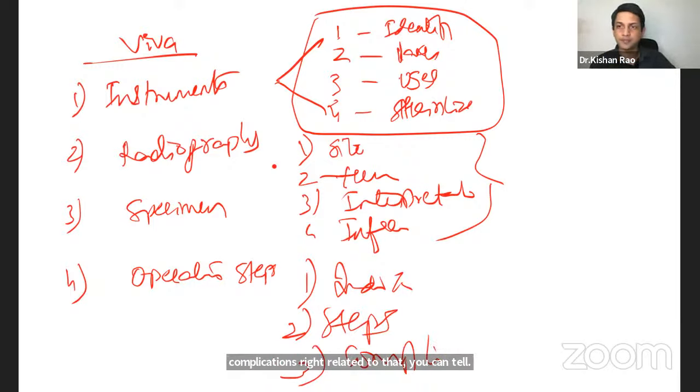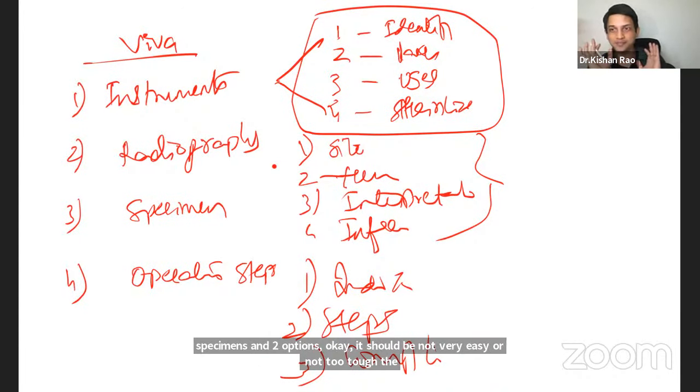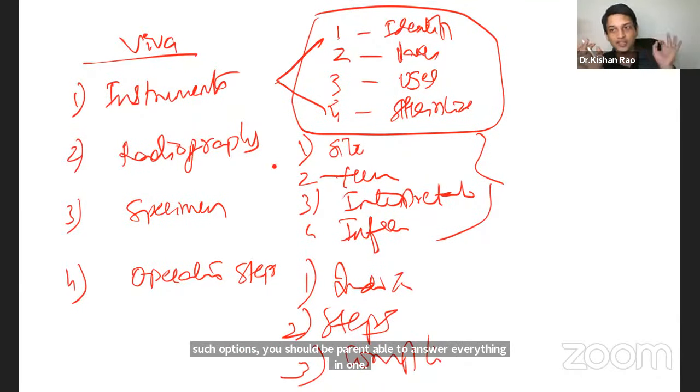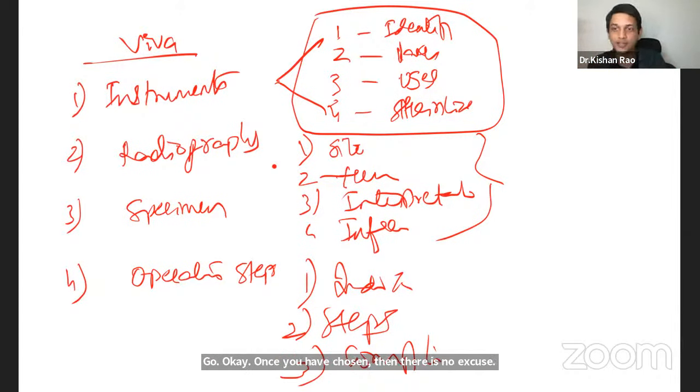So most of the times in VIVA, what happens is they'll give you an option to pick up any instrument. I tell anyone surgery, which you've seen. Pick up any one radiograph. So from our set of radiographs in our college or instrument, we should be thorough with any two, three instruments, two, three radiographs or two specimens and two operative. It should be not very easy or not too tough. The medium ones you should select and keep ready. When given such options, you should be confident, able to answer everything in one go. Once you have chosen, then there is no excuse. You should be able to tell everything about that. If the examiner only asked if you don't answer. But if you have selected, then you should be able to answer. Then you can't make any mistakes. So VIVA definitely going to be very easy. Already those 20 marks already there in your pocket if you have prepared this much. So that's easy marks VIVA easily fetchable. So prepare well for this.